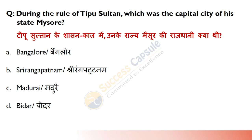During the rule of Tipu Sultan, what was the capital city of Mysore? Answer is B — Srirangapatnam. Hyder Ali ki bhi yahi capital thi aur Tipu Sultan ki bhi yahi capital thi. Yeh Kaveri River ke banks par located thi aur Kaveri River ke ek island par situated thi.